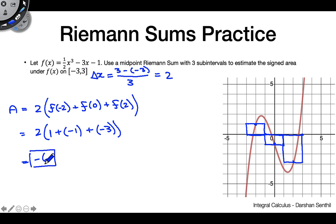The negative answer shouldn't be intimidating. In a displacement context, with this as a velocity function, it means that over this time interval you've gone 6 units in the negative direction — your displacement is 6 units to the opposite side of your starting point.